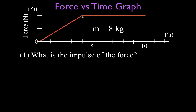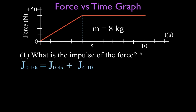We can divide this graph into two sections because I see a triangle from 0 to 4 seconds and a rectangle from 4 to 10 seconds. The whole thing is also a trapezoid, but most people are more familiar with triangles and rectangles. So I'm going to divide the area under this graph into a triangle section and a rectangle section, and figure the area under both of them — that will give us the impulse.